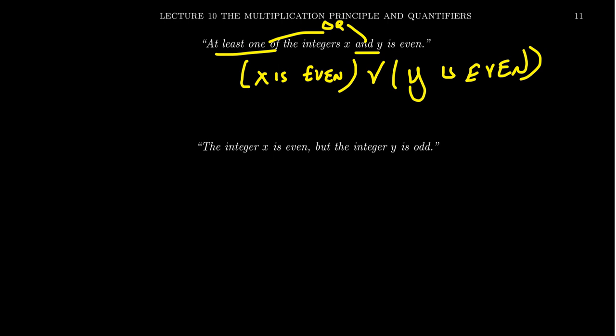Because when we talk about ors in the logical sense, what we mean is this one happens, not this one, or this one happens, not this one, or they both happen. It could be that they're both even numbers when we say at least one of them is even. But it really is a disjunction. So this is why I mentioned we focus on symbolic representation because it can help us get the real meaning of the statement.